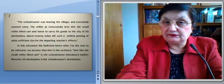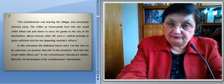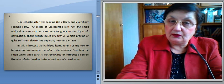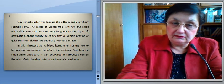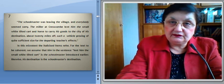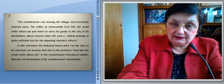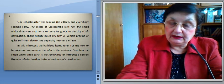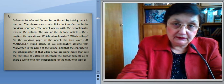The text reads: 'The schoolmaster was leaving the school, the village, and everybody seemed sorry. The miller at Cresscombe lent him the small white tilted cart and horse to carry his goods to the city of his destination, about twenty miles off, such a vehicle proving quite a sufficient size for the departing teacher's effects.' In this micro-text, the italicized items refer as follows. For the text to be coherent, 'the village,' 'that,' and 'him' — in the sentence 'lent him the white tilted cart' — refer to the schoolmaster introduced earlier. Likewise, 'his destination' is the schoolmaster's destination. Reference for the pronouns 'him' and 'his' can be confirmed by looking back in the text. The phrase 'such' also links back to the cart in the previous sentence.